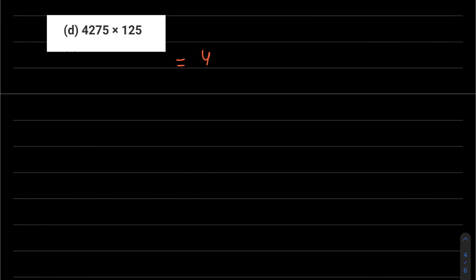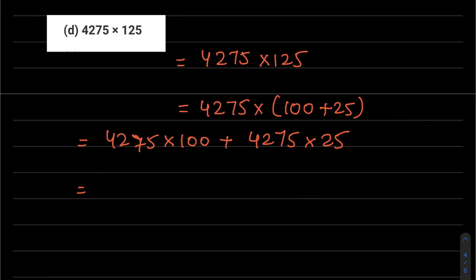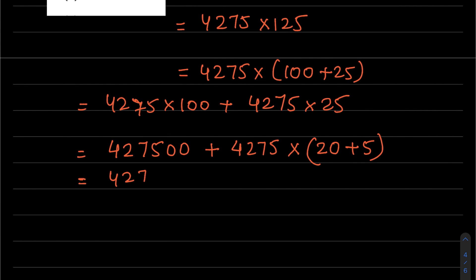Part d: 4275 into 125. We can write this as 4275 into 100 plus 25. So 4275 into 100 plus 4275 into 25. 4275 into 100 is 427,500. Here we can further simplify using distributive property: 25 can be written as 20 plus 5.